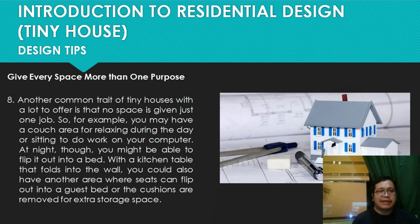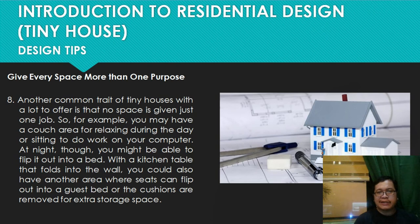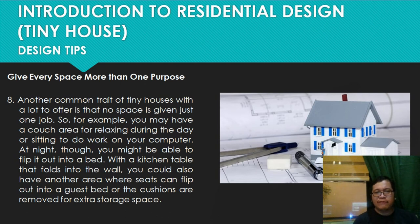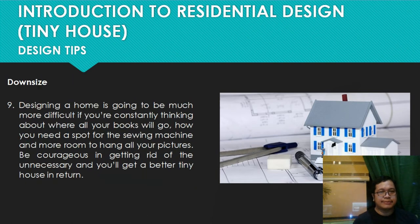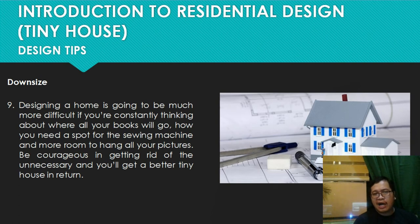Number eight: give a space more than one purpose. A common trait of well-designed tiny houses is that no space is given just one job. For example, you may have a couch area for relaxing during the day that flips out into a bed at night, with a kitchen table that folds into the wall. Seats can also flip out into a guest bed, or cushions can be removed for extra storage. Number nine: downsize. Designing a tiny home is much more difficult if you're constantly thinking about where all your books or sewing machine will go — be courageous in getting rid of unnecessary items.